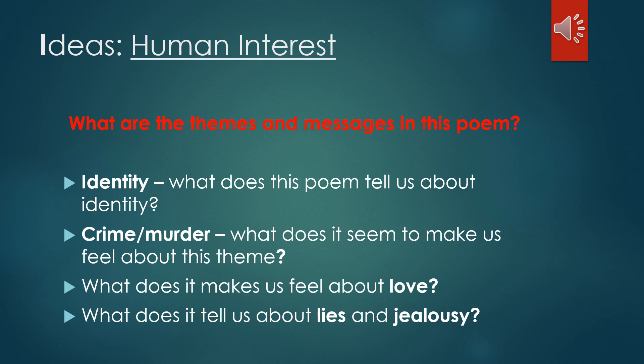Now we need to look at the ideas in Human Interest. What are the themes and messages in this poem? What is the poet trying to get us to think about? I've given you some topics on the screen: What is the poet saying about someone's identity? What is the poet trying to communicate about crime and murder? What does this poem make us feel about love? And finally, what does it tell us about lies and jealousy? Make sure you write your notes down under the subheading 'ideas'.